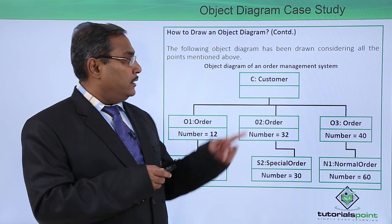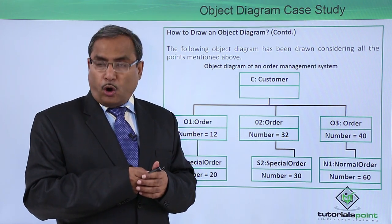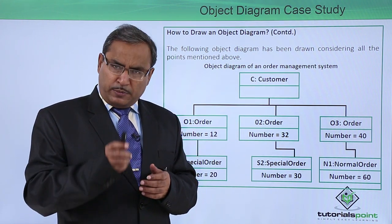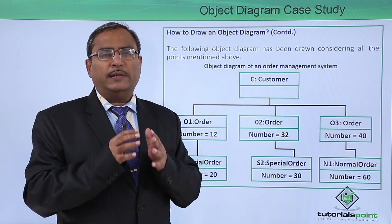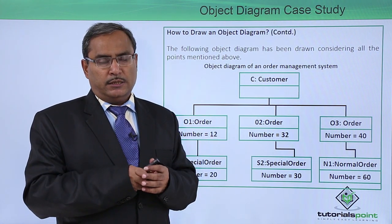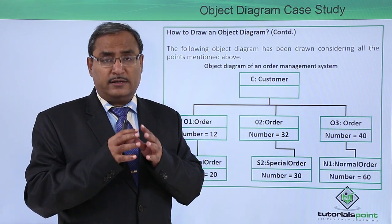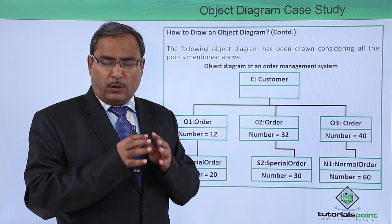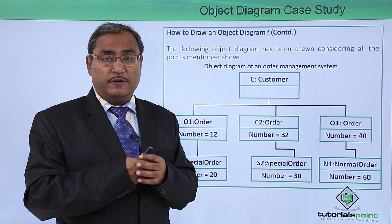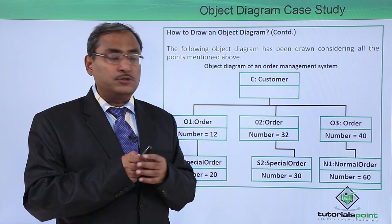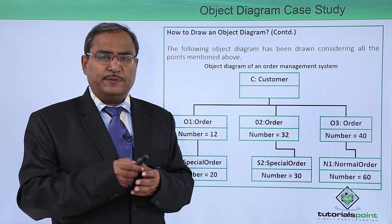In this way, the object diagram has been depicted for an order management system. Whenever such object diagrams are to be drawn, we should consider one instance of the application at runtime. Depending upon that particular instant, whatever objects are in memory and the different values in their respective attributes will be depicted in the object diagram. Thanks for watching.